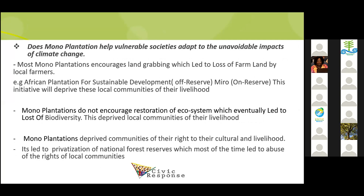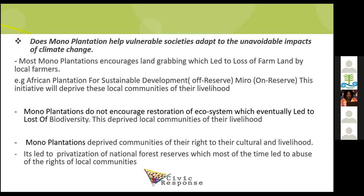In the case of APSD, more than 20,000 hectares of community farmland — the source of livelihood for communities — were taken away and given to the company to plant eucalyptus. Mono plantations over the years have led to a lot of land grabbing and loss of farmland, with serious implications for food security. Mono plantations also do not encourage ecosystem restoration, leading to loss of biodiversity. Forests are not just trees — forests include animals, and when you introduce a new monoculture species, you evict animals from their habitats, reducing biodiversity.